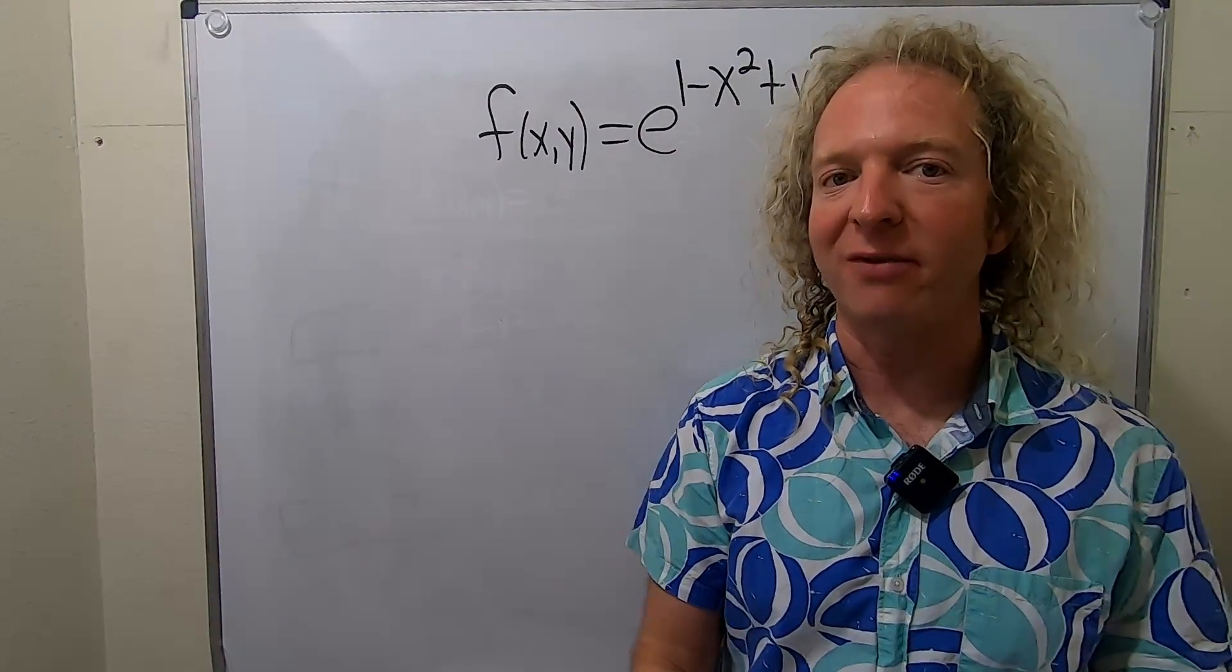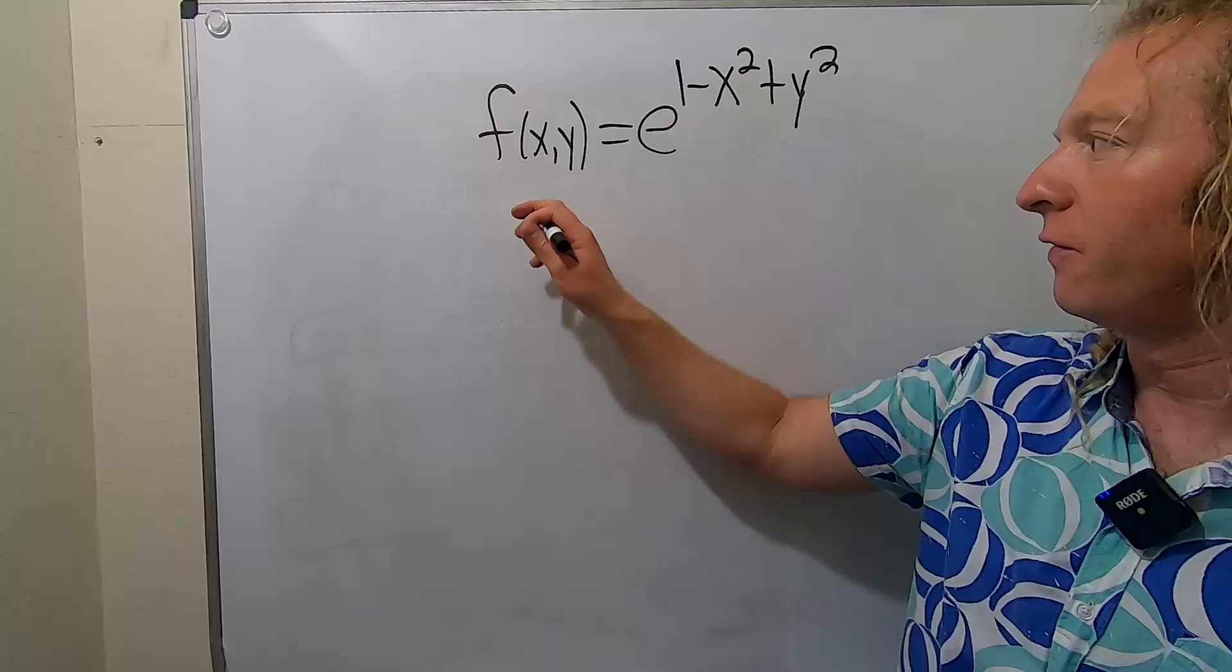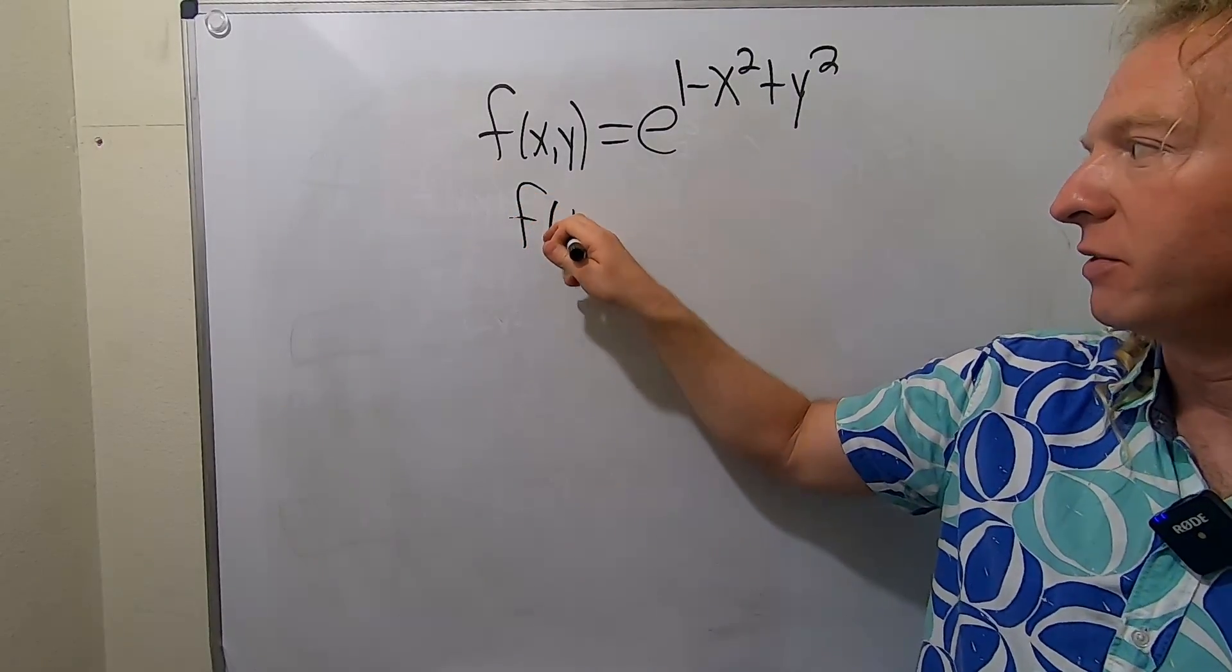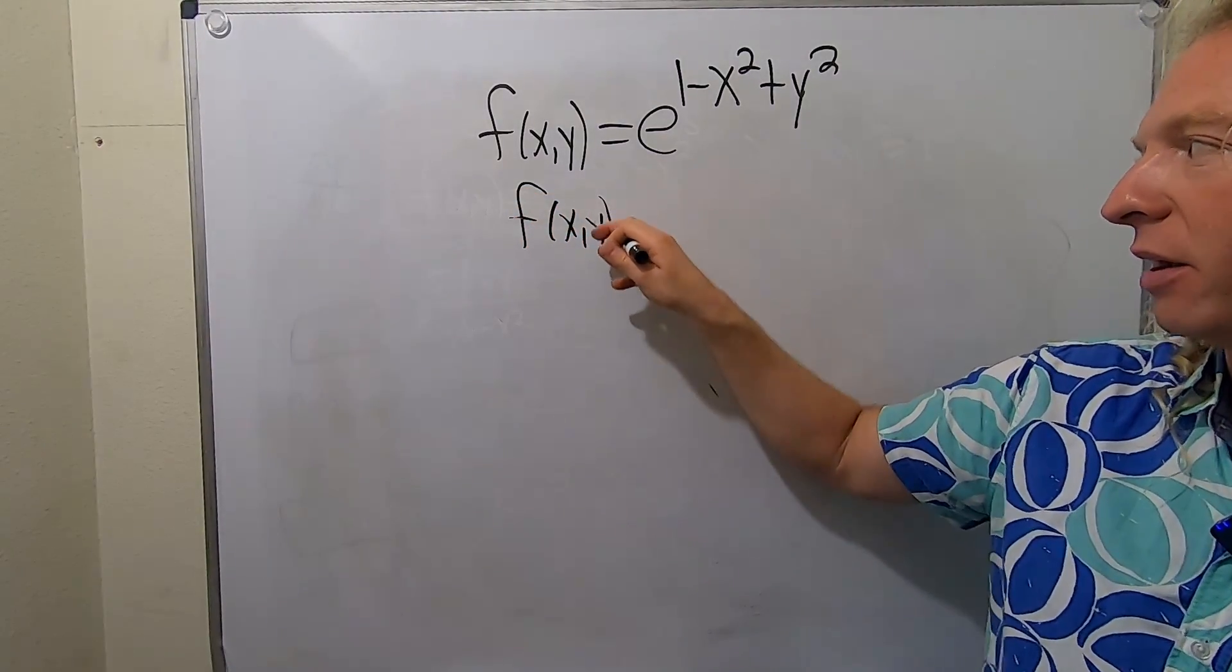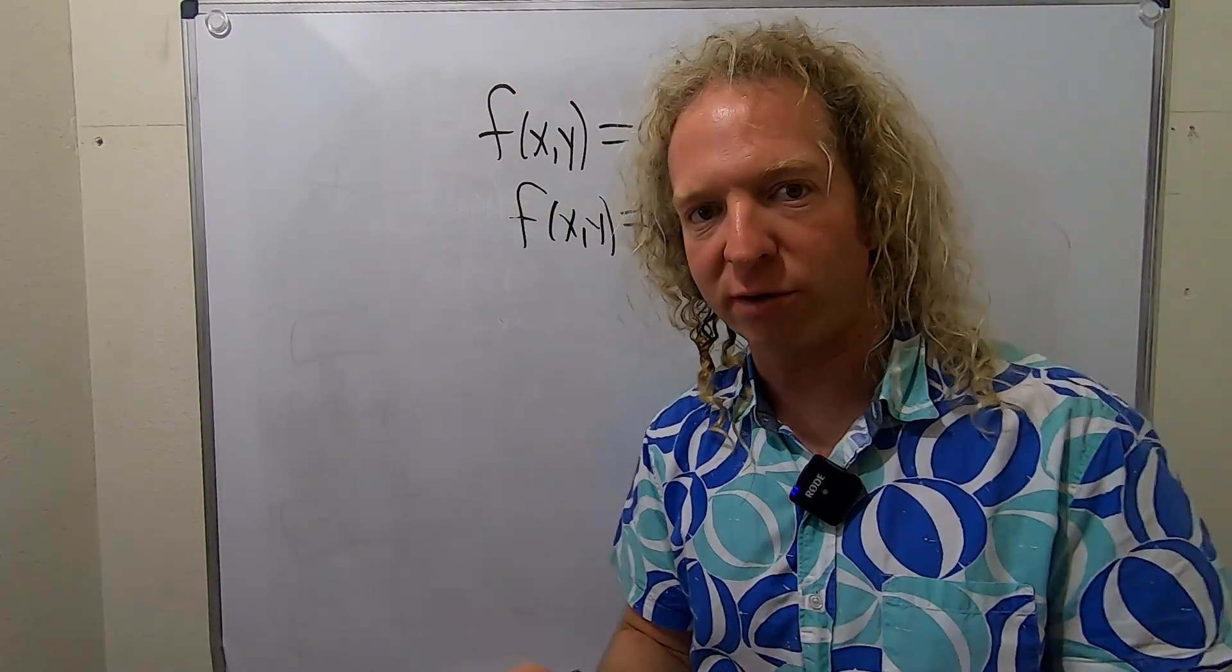In this video, we're going to find the level curves of this function. The level curves of a function are the two-dimensional curves that are given by this equation: f of xy equal to a constant. So these will be two-dimensional curves.